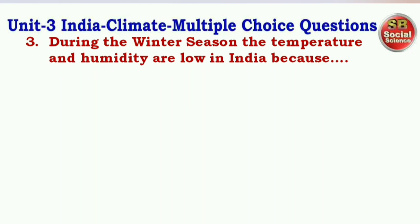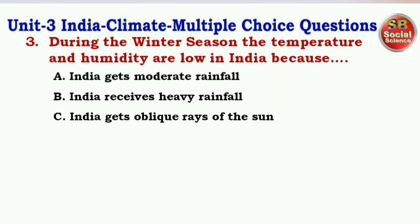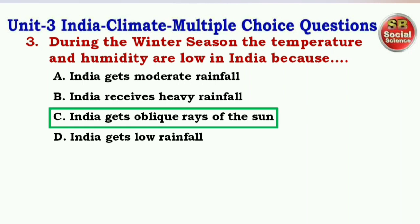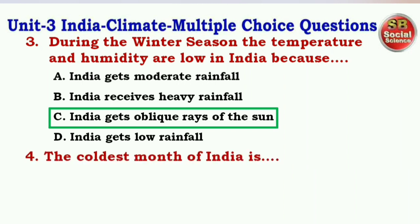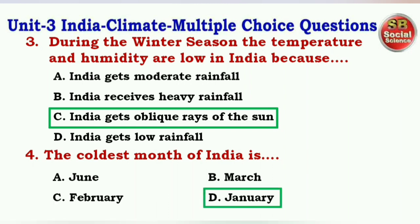Next question: During the winter season, the temperature and humidity are low in India because — options are India gets moderate rainfall, India receives heavy rainfall, India gets oblique rays of the sun, India gets low rainfall. The right answer is option C — India gets oblique rays of the sun.